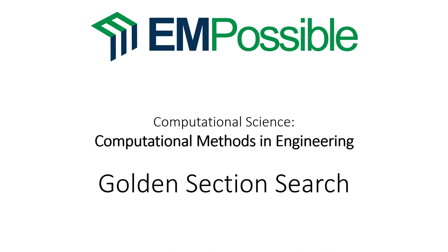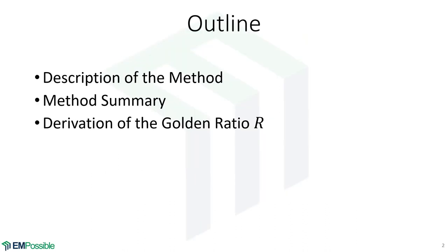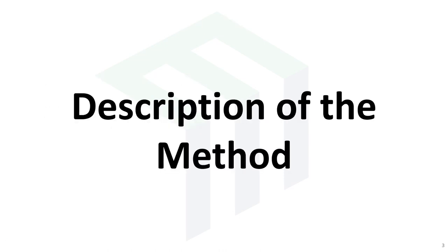Golden section search. This is a very fast and efficient way to close in on an extremum. We'll step through the method by illustration, summarize the method, make some notes about it, and at the very end derive this magical golden ratio number that's used in the algorithm that makes it incredibly efficient. It's a quite magical number, and you'll see how it's magical for optimization here.